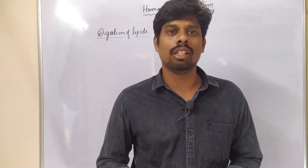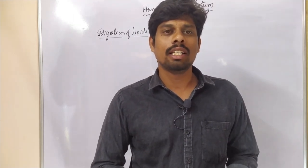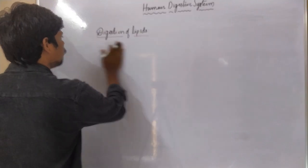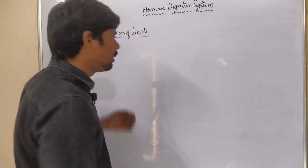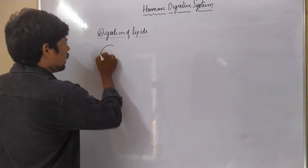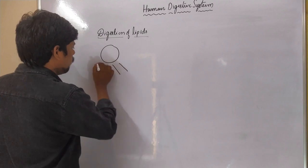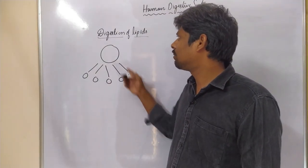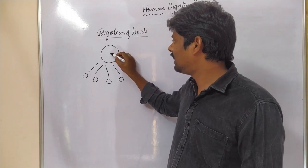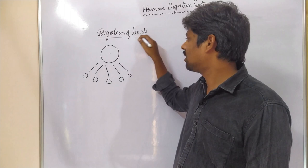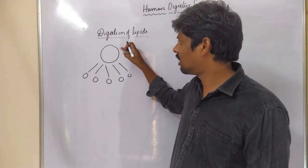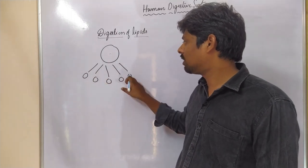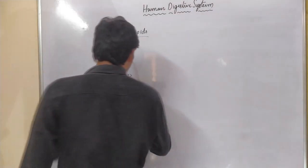Hello, welcome to my channel HSR Bio Info. Today in this class we are going to discuss digestion of lipids — how digestion of lipids takes place in the human digestive system. Digestion is the process of conversion of macromolecules into micromolecules. If this digestive material is lipids, that is called digestion of lipids — conversion of large particles of lipids into small particles.